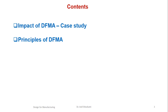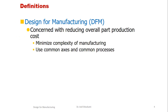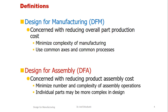Let's start with the first part. Before going to the impact of design for manufacturing, let's just refresh what is design for manufacturing and what is design for assembly. Design for manufacturing is concerned with the reduction of overall part production cost. We have to minimize the complexity at the part or component level related to manufacturing, and we have to use as much as possible common manufacturing processes and common tools.